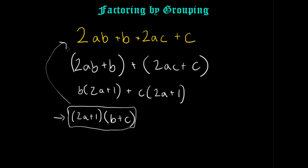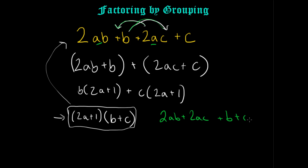A point should be made that in this problem, you don't have to group the B's and C's together — you could also group the A's together. What that would look like is you just readjust and move terms so that the A's are next to each other. Let me change the color so there's no confusion. I'm going to rewrite it — move this here and move this here, which I'm allowed to do. So I get 2AB plus 2AC — the A's are now linked together — and then plus B plus C.